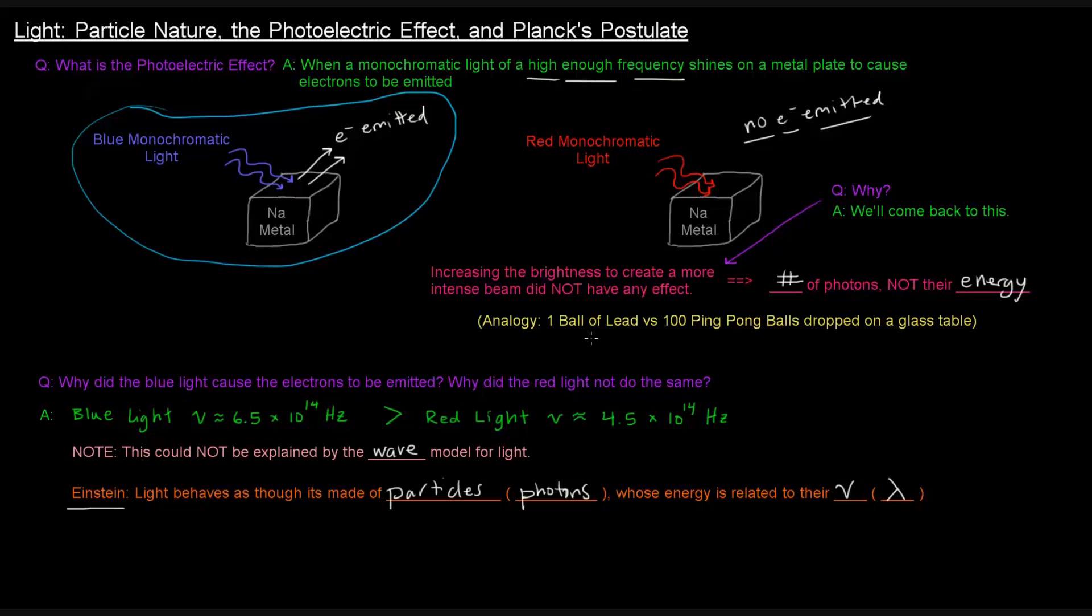So what's a good analogy here? An analogy would be like if you have a glass table, and you dropped one dense ball of lead on it versus dropping 100 ping pong balls on the glass table. One ball of lead, if you drop it on a glass table, it'll probably shatter the glass, right? Even though it's just one ball. But if you have 100 ping pong balls, it doesn't matter that you have 100, right? Because the ping pong balls themselves are not going to break the glass table. It's kind of the idea here, whereas the blue monochromatic light is like one ball of lead versus the red monochromatic light photons shining on the sodium metal are kind of like the ping pong balls.